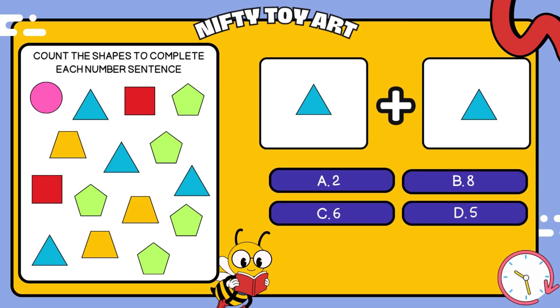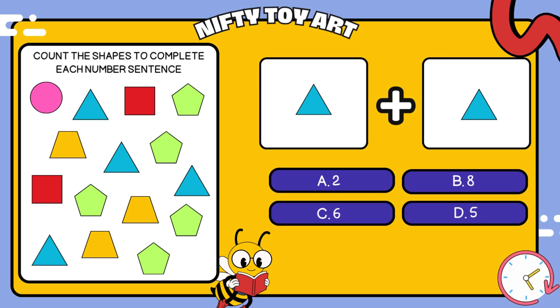I have a triangle plus triangle. How many all together? That's right, eight.